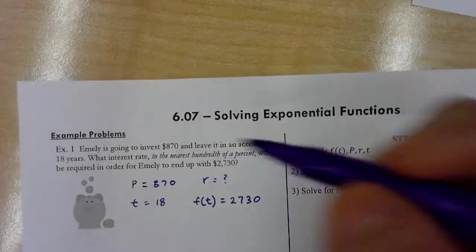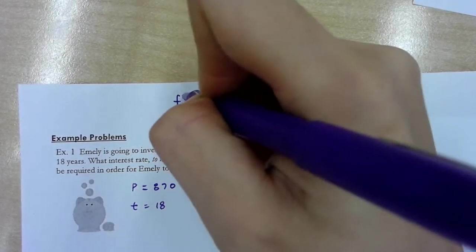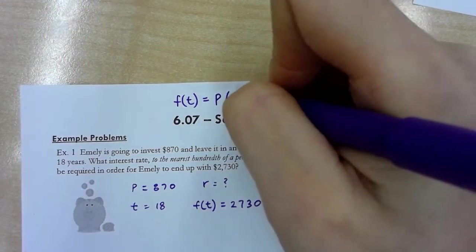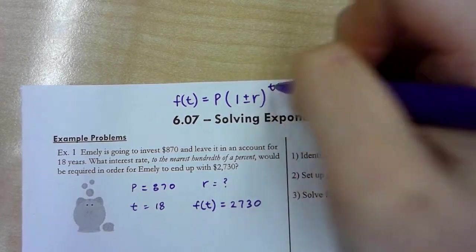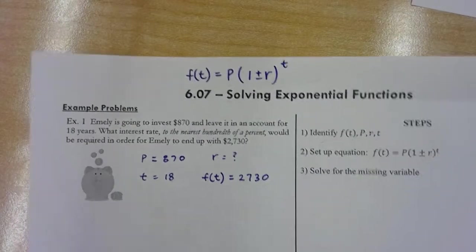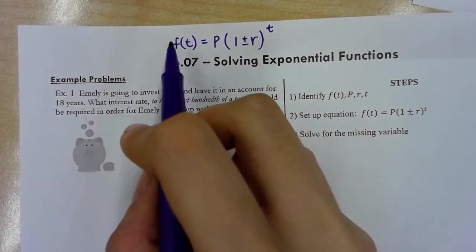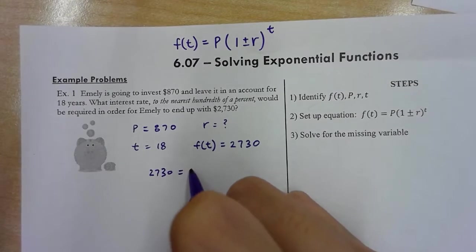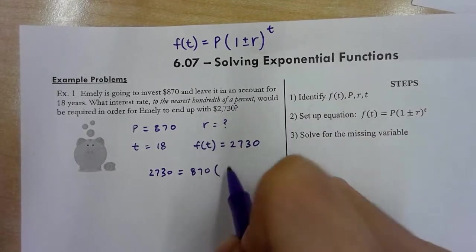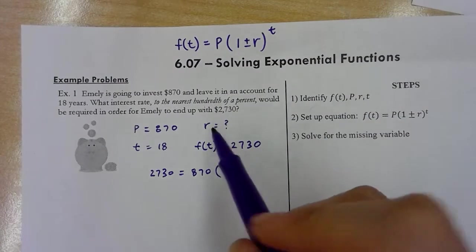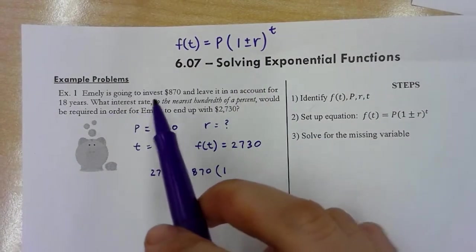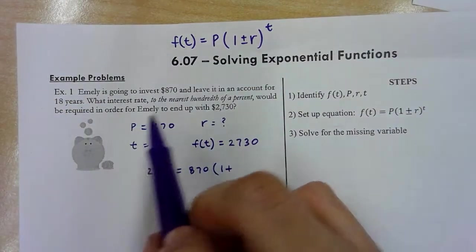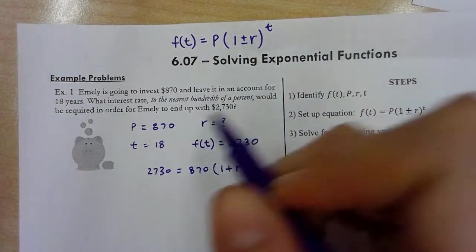Now we're going to put it into the form. Let's go ahead and set up the equation. This is 2730 = 870(1 + r)^18. Here, it's 1 plus r, because she's investing the money and she's going to end up with a higher amount.